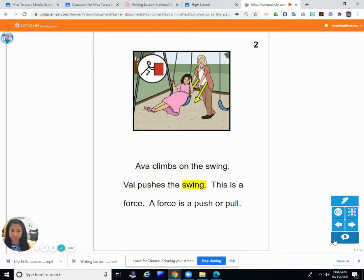Ava climbs on the swing. Val pushes the swing. This is a force. A force is a push or pull. So when you go to the park and you get on the swings, which a lot of you probably like to go on because they are fun. Maybe somebody has to help you move the swing, right? If you sit down on the swing and do nothing, are you going to move? Probably not. So somebody has to usually help you, give you a push. So they push you with their hands forward. That is called a force. A force is a push or pull. Something that moves you or moves objects.